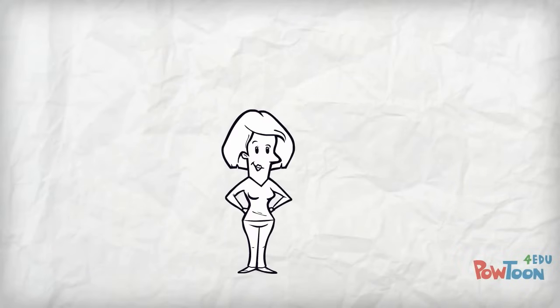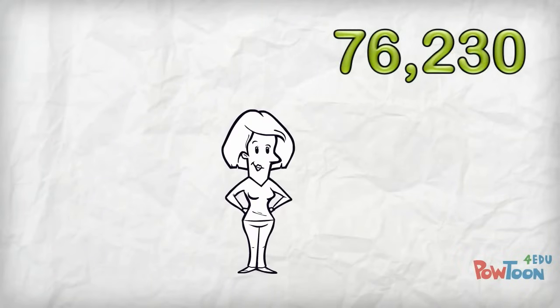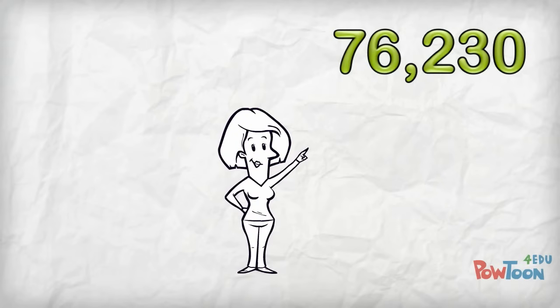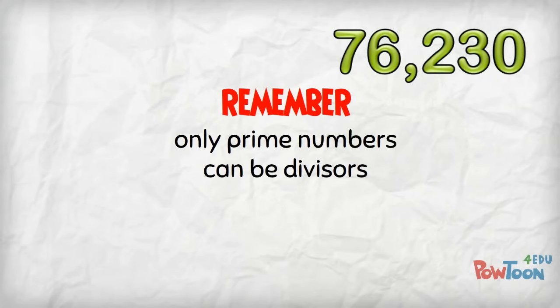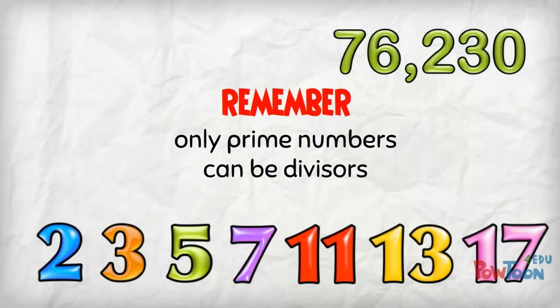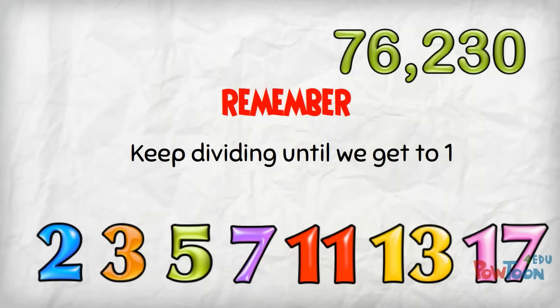I'm going to do the prime factorization of 76,230 to show how fast this method is. Remember, we can only use prime numbers as divisors, and we keep on dividing until we get to the answer of 1.